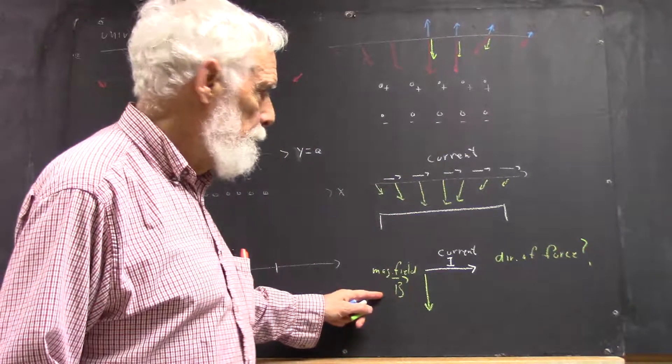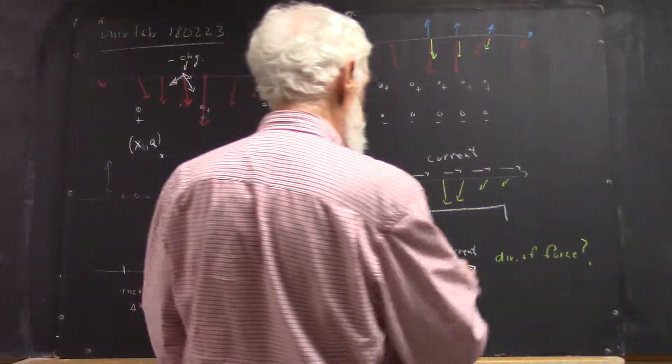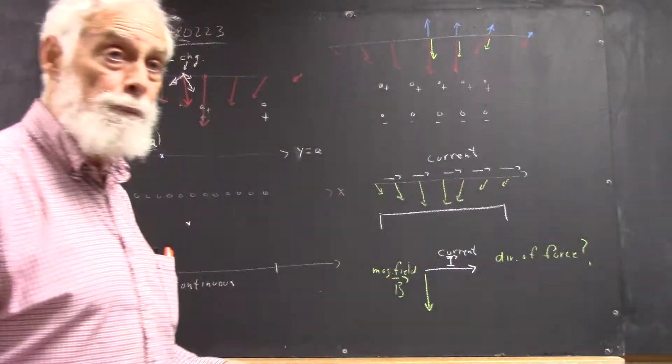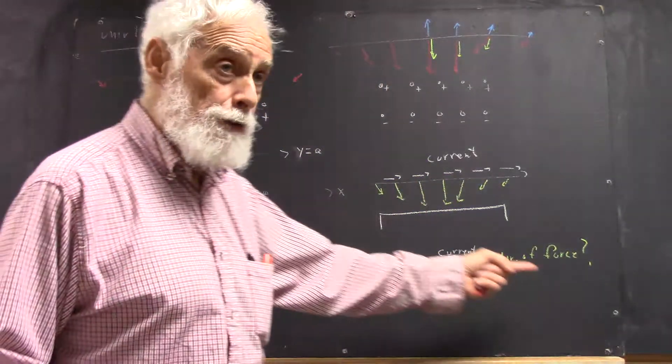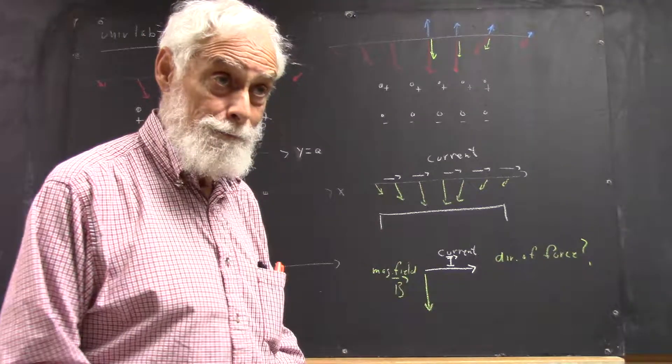And we use a capital B for magnetic field. The current is actually a vector because it has a direction and the direction is important. The magnetic field is a vector.